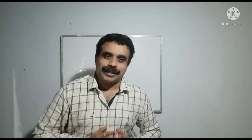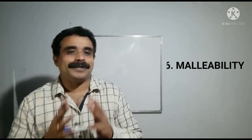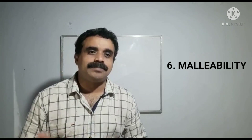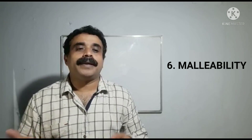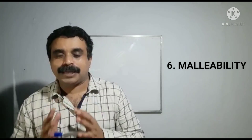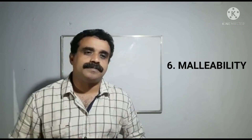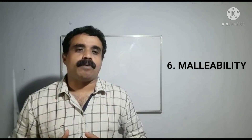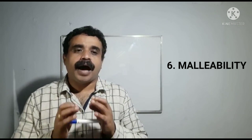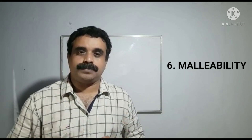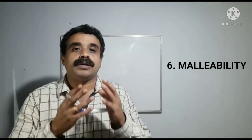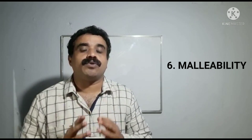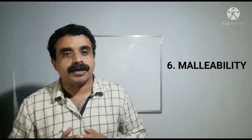Property number six: malleability. Metals are malleable, which means metals can be beaten into thin sheets. Because of this property, iron is used in making big shapes, and metals like gold and silver are used for making jewelry.